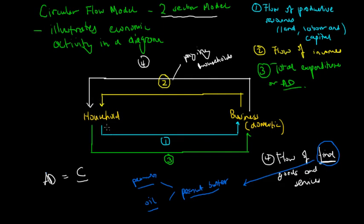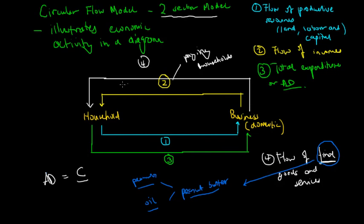This is where income comes from. In this two sector model, flow three represents the total expenditure or aggregate demand of the economy. When households receive their incomes, they spend all of it to improve their material living standards — so aggregate demand is just consumption expenditure. When households spend their incomes, businesses supply goods and services. The last flow is the flow of final goods and services, which reflects the overall level of economic activity and is commonly measured by GDP.